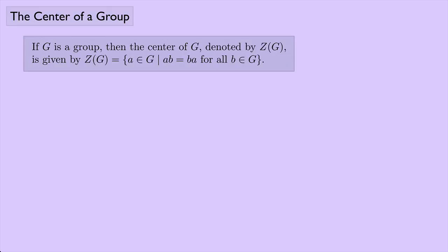Let's define something called the center of a group. If G is a group, then the center of G, denoted by Z of G, is given by the set of all elements A that are in G such that A times B equals B times A for all elements B in the group G. So we're looking for elements in G that commute with all the other elements in G.